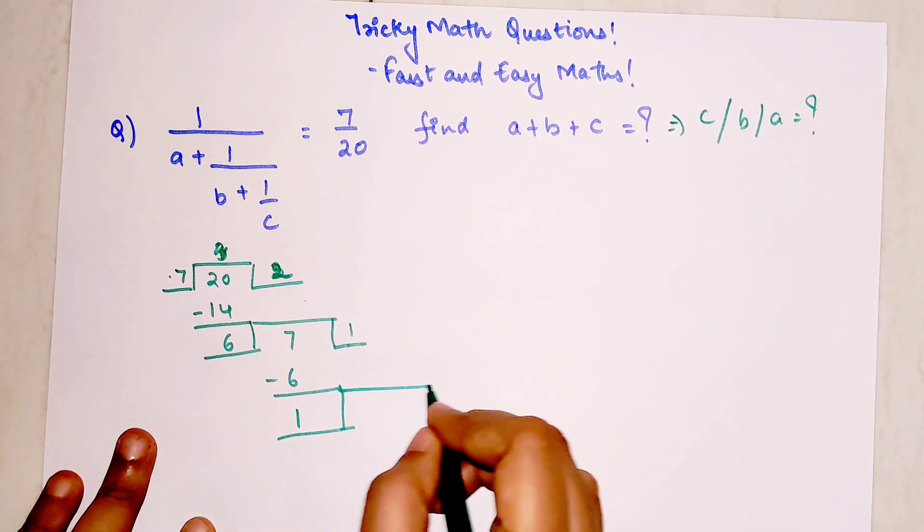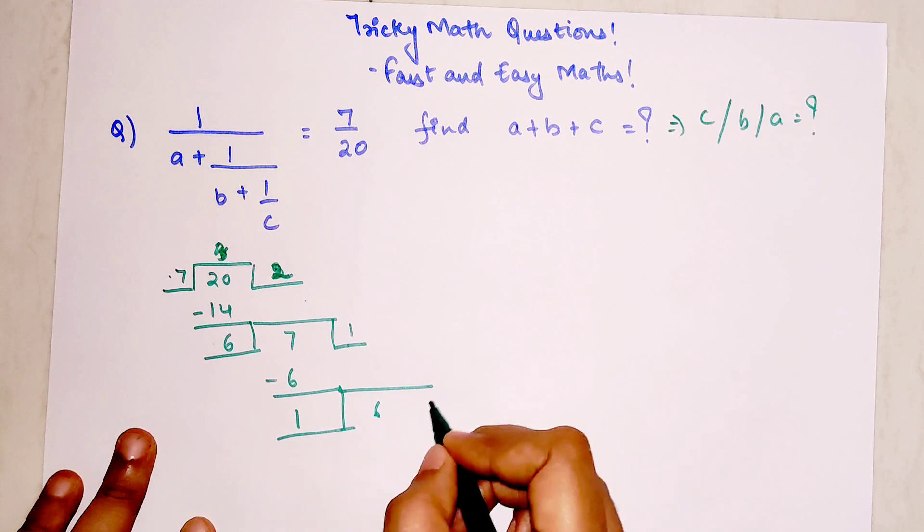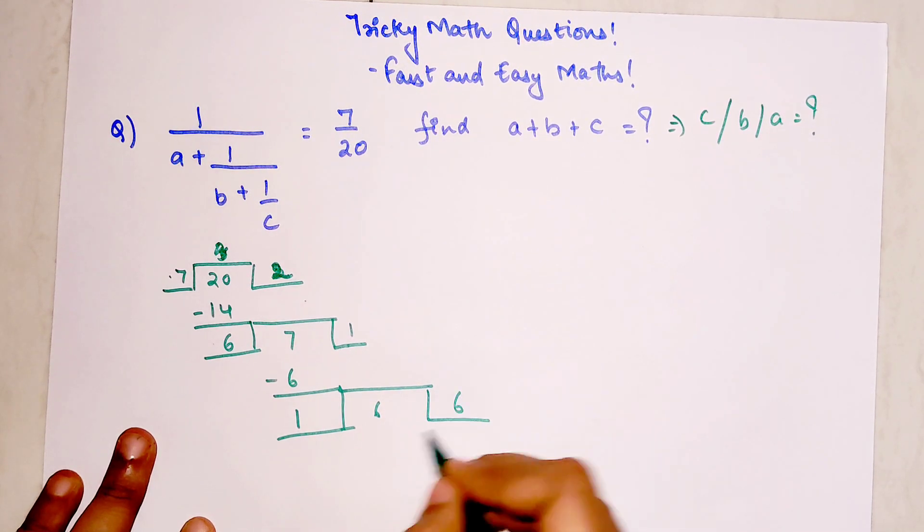And now I am again dividing 1 by the number given over here. So this is 6, this 1, 6 are 6, so this is getting you a 0.